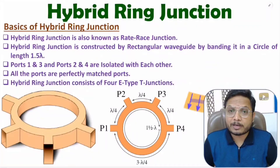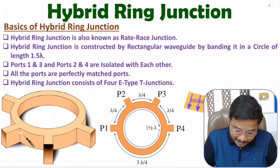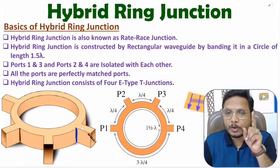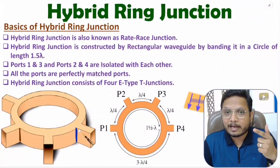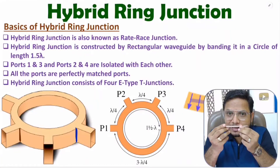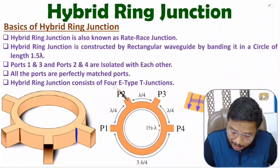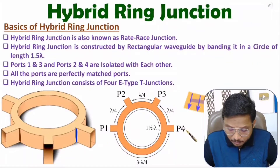One more essential point about the structure: we have 4 ports — port 1, port 2, port 3, and port 4 — and these ports are E-type T junctions. E-type T junction means the port is connected from the broader dimension of the waveguide. With the broader dimension we have the port, so that junction is called an E-type T junction.